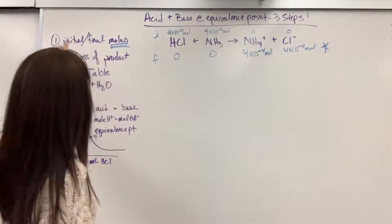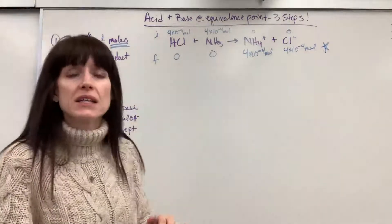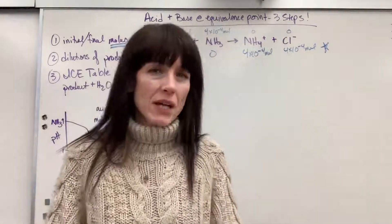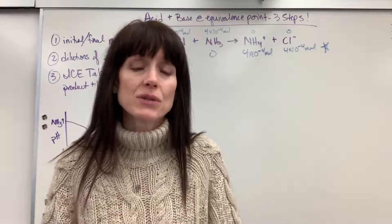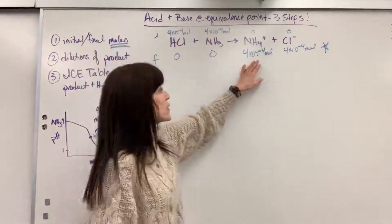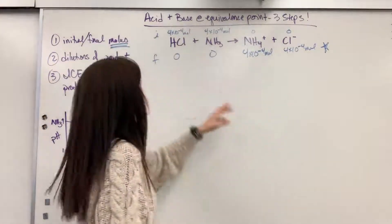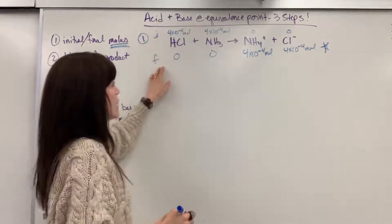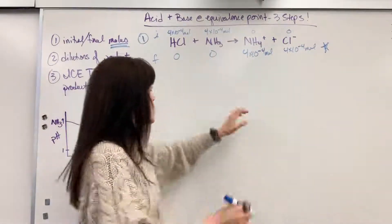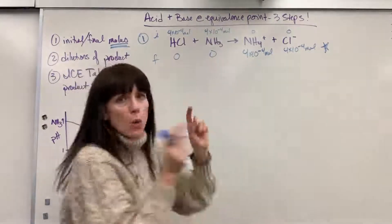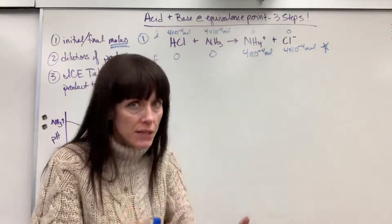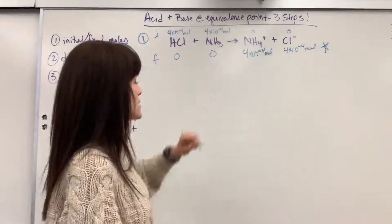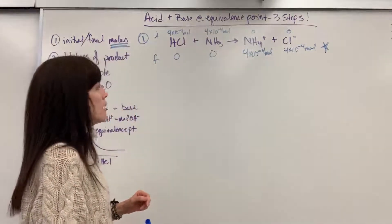Step two is dilution. I need to find the new molarity. I've got moles and I know that eventually to find pH, I have to do an ICE table. ICE tables use molarity, so I've got to convert from moles to molarity. That was step one — initial final moles — I know what my final moles are. Again, if you end up with numbers on the reactant side for final, watch my video on Henderson-Hasselbalch.